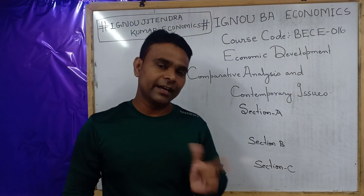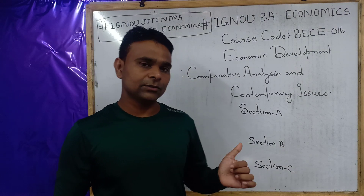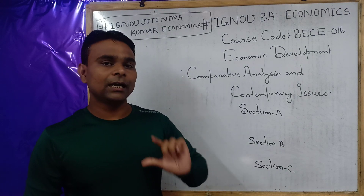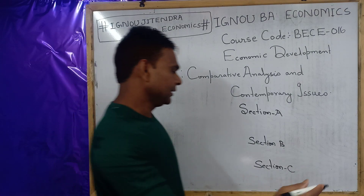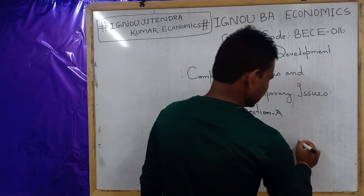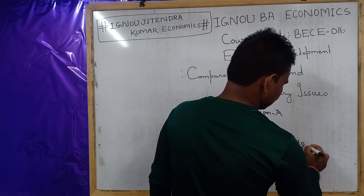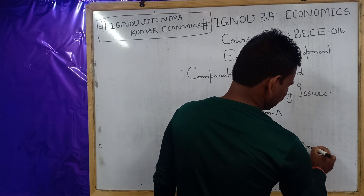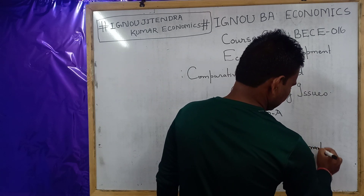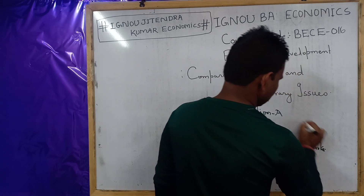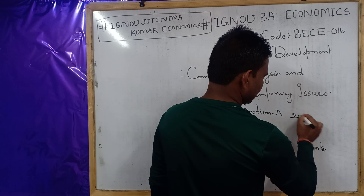Each question under Section C carries 6 marks, whereas each question under Section B carries 12 marks, and each question under Section A carries 20 marks.